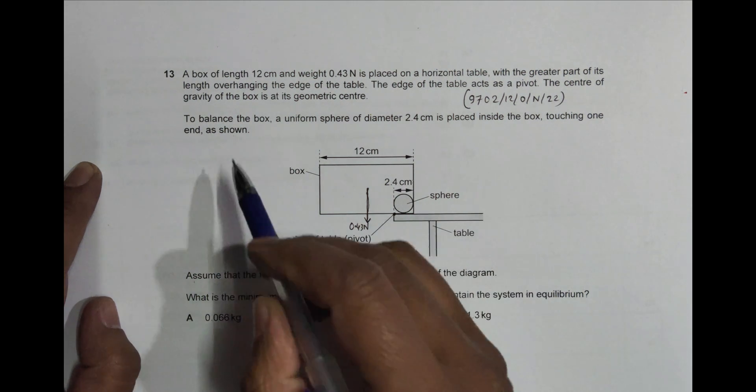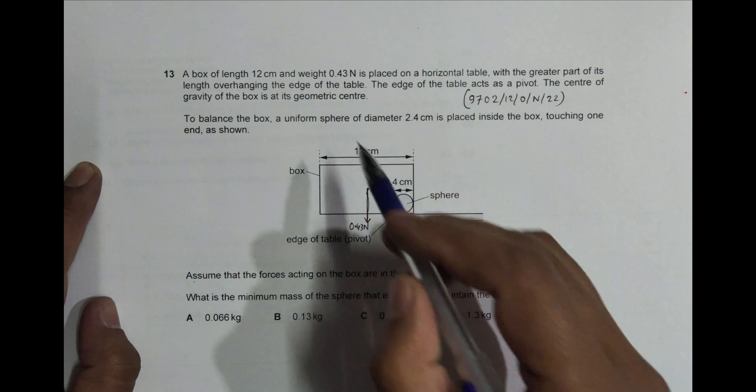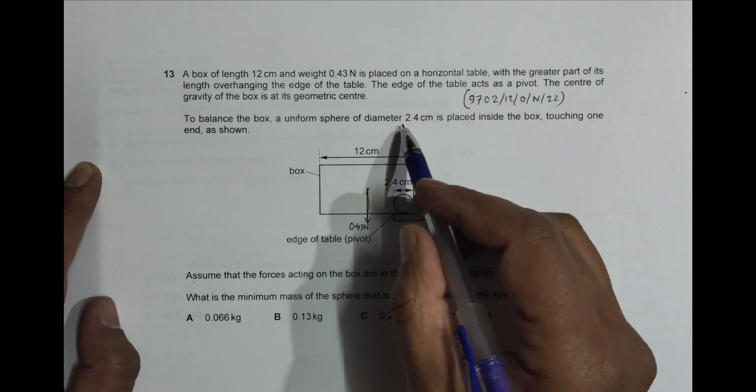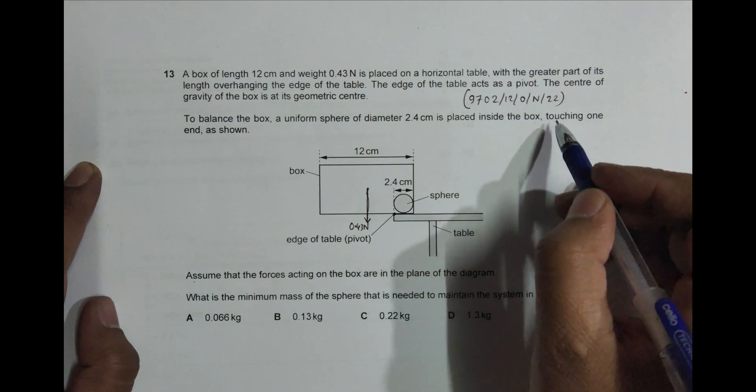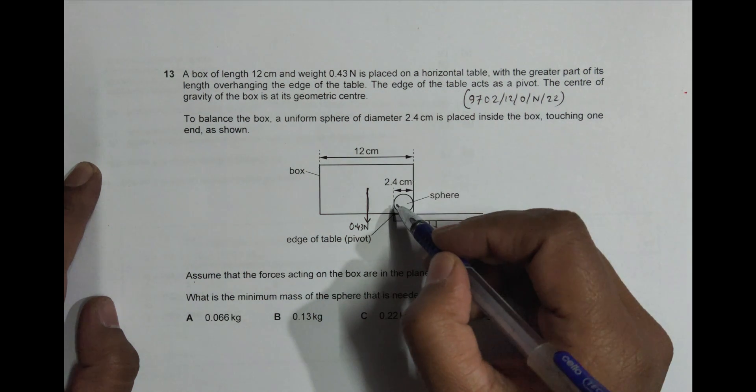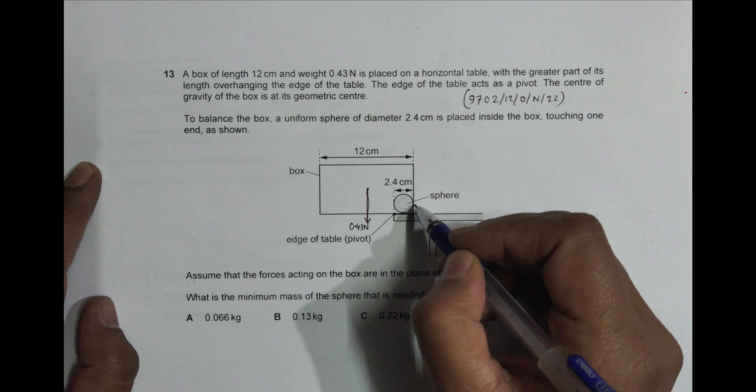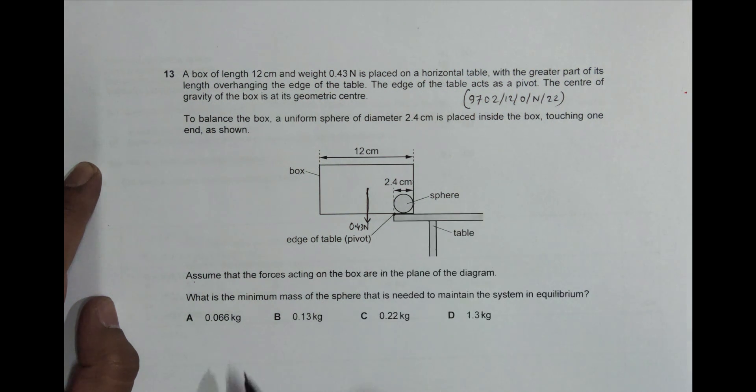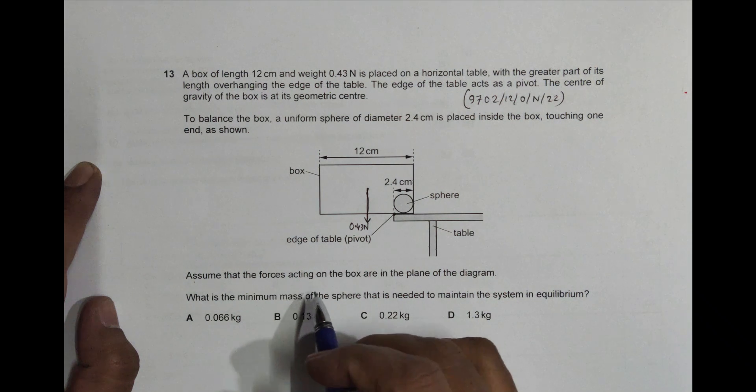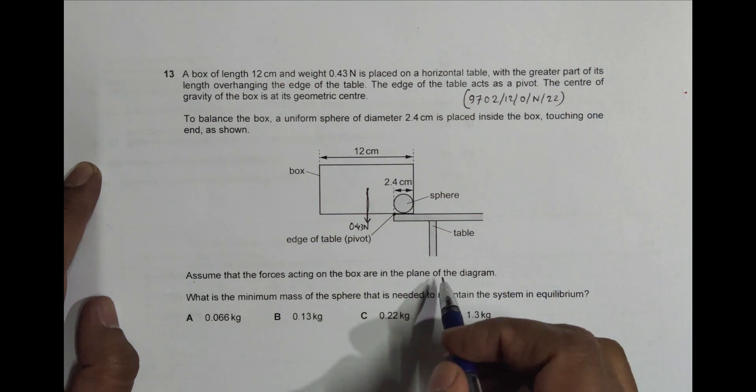To balance the box, a uniform sphere of diameter 2.4 centimeters is placed inside the box touching one end. So the sphere will be touching the box at one end like this.